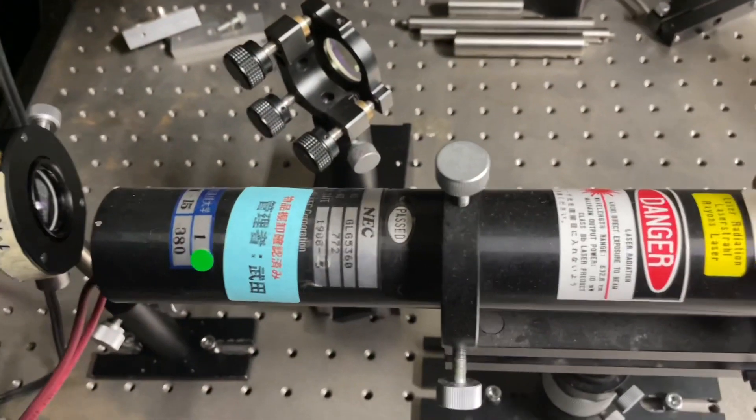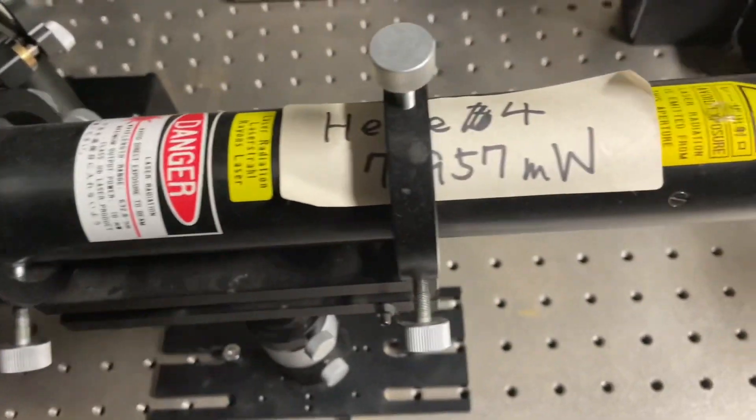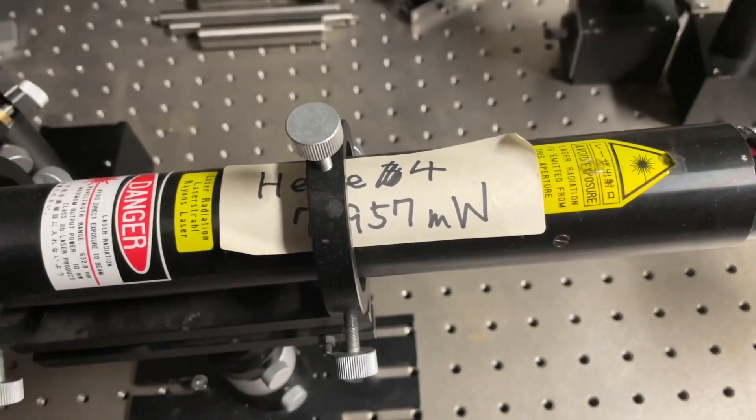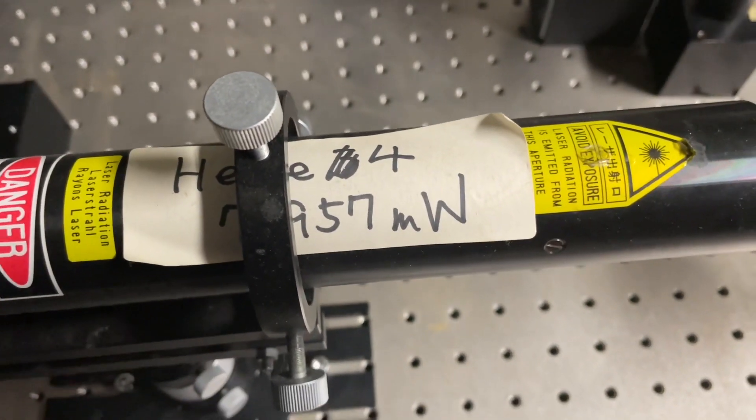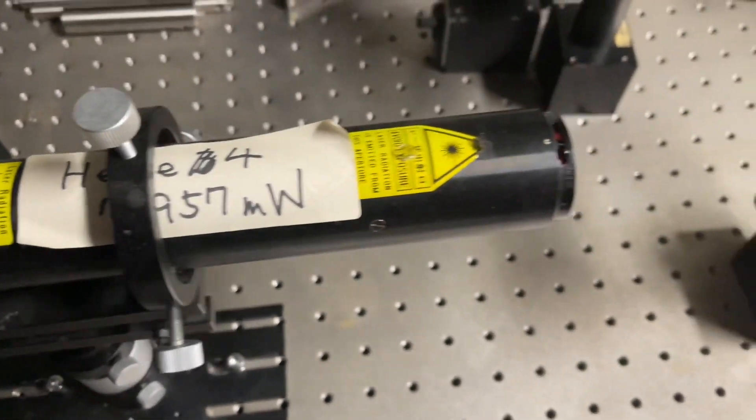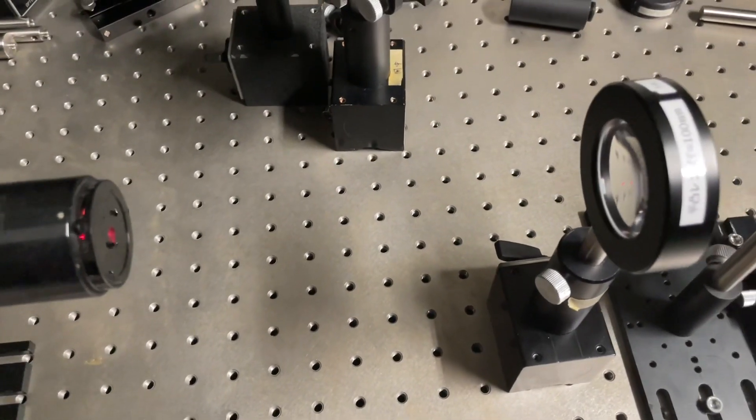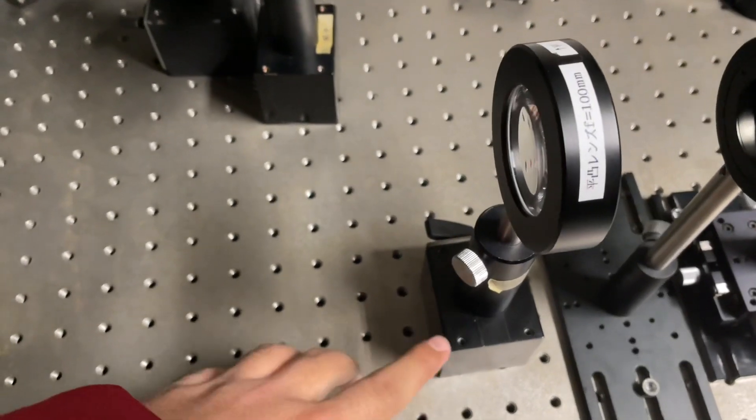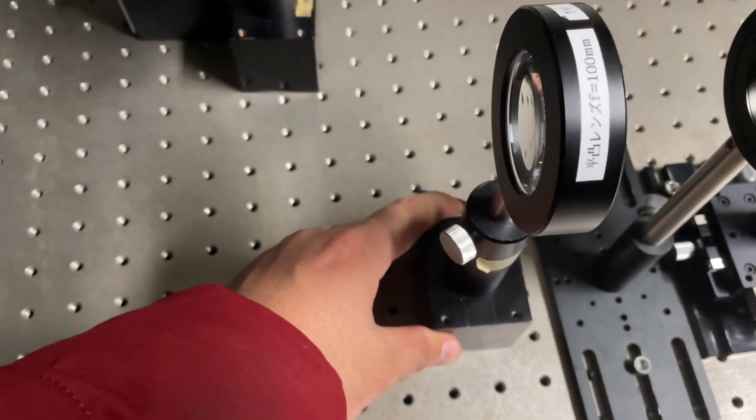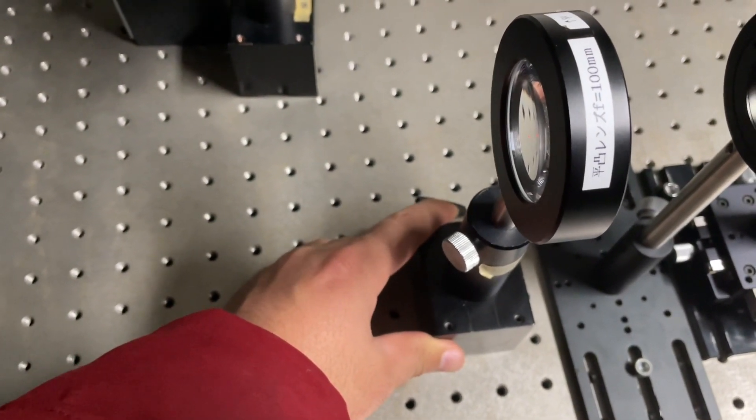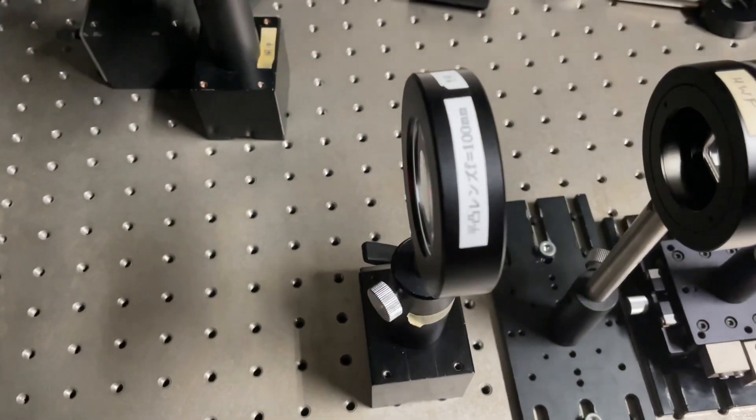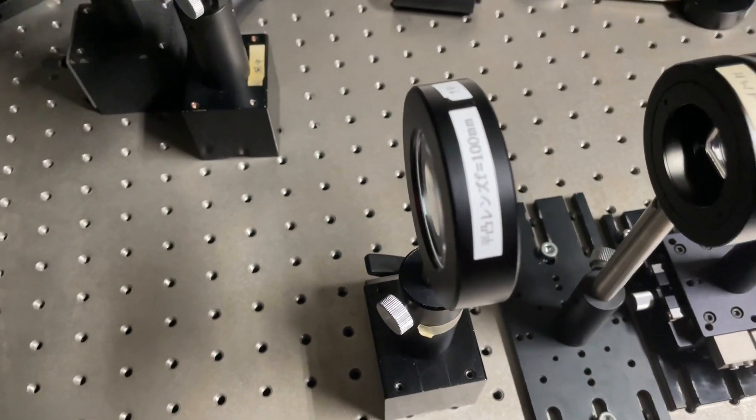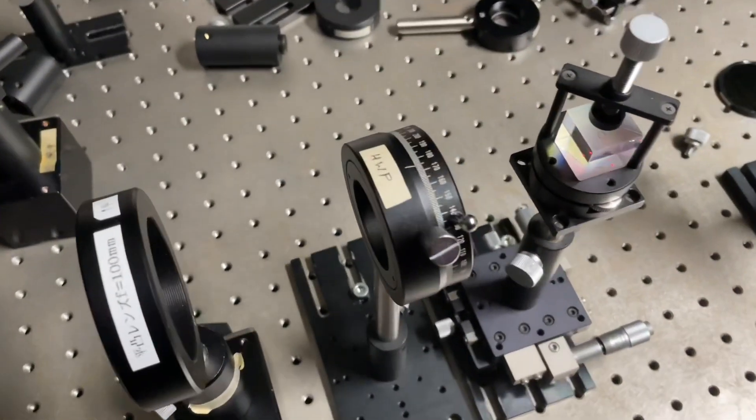First of all, this is a laser source, which is a 632 nanometer red laser, helium neon laser. In front of this, we have a collimating beam lens with a focal length of 100 mm. After that, we have a half-wave plate.